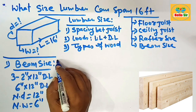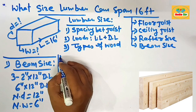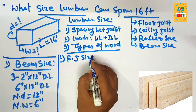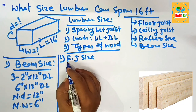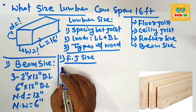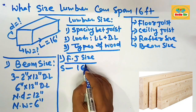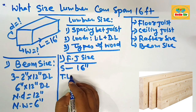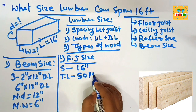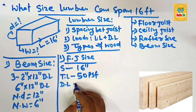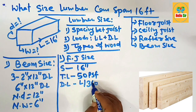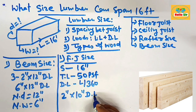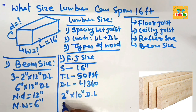This beam size is used to span a 16-foot distance. Now, the second topic is what floor joist size is required to span 16 feet. There are several factors: the first is spacing of 16 inches on center, the second is a total load of about 50 pounds per square foot, and the deflection limit is L/360.